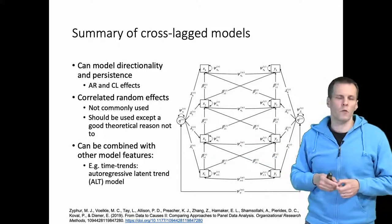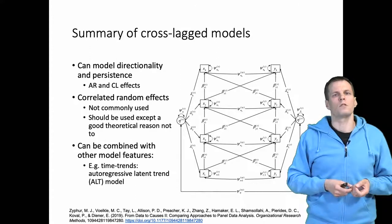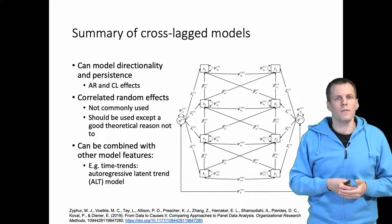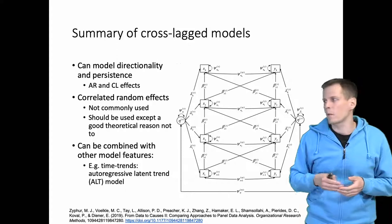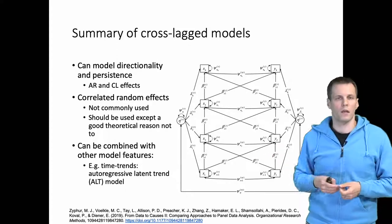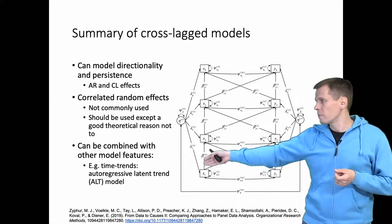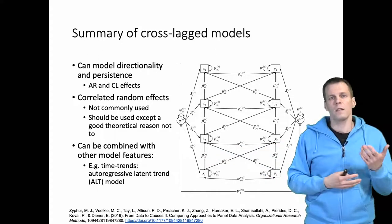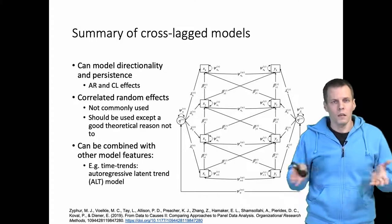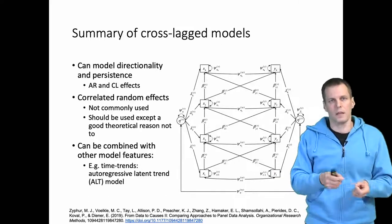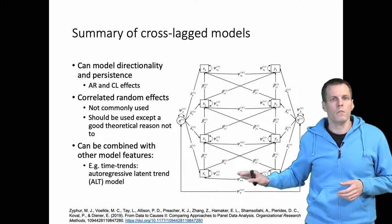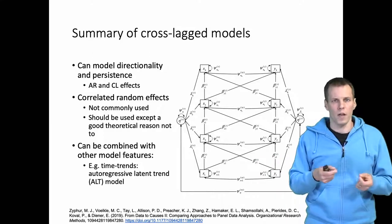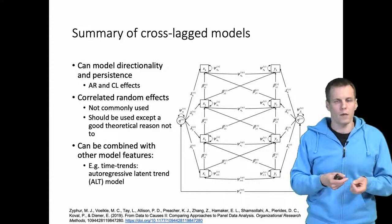These models of course can be combined with other modeling features. This is a dynamic model, so we have effects over time. We can of course add effects of time to the same model. For example, if we combine this model with a latent change model, then we would have an autoregressive latent trend or ALT model. These different models are simply combinations of different effects in certain different ways. This basic cross-lagged model with random intercepts provides a good foundation on which to start building more complicated models.